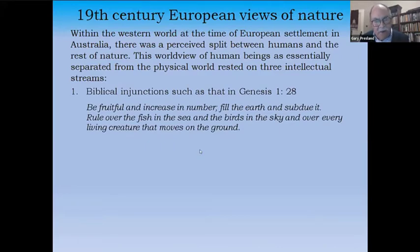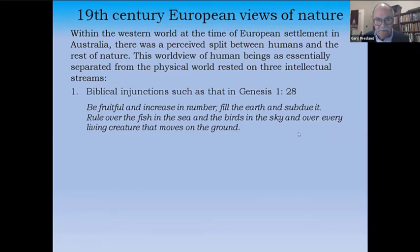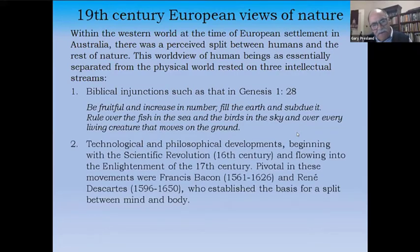This rested on three intellectual streams of the Western tradition. First, there was the Bible. The Bible told people what to do, and one of its injunctions was: 'Be fruitful and increase in number, fill the earth and subdue it, rule over fish and sea.' This immediately gave many people a licence to think that humans were there to take charge of the world and do with it whatever they wanted.